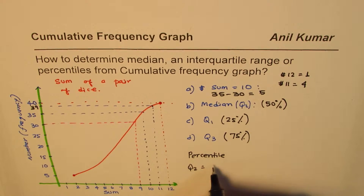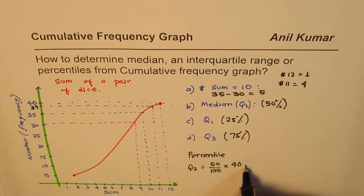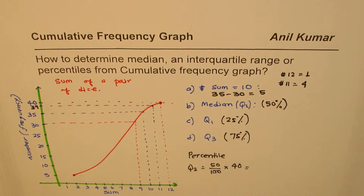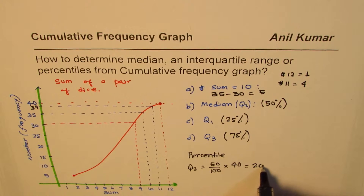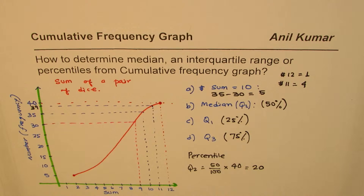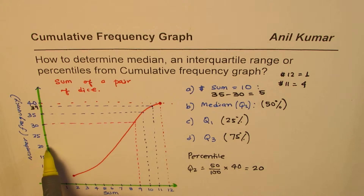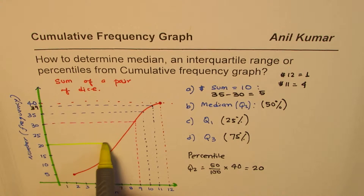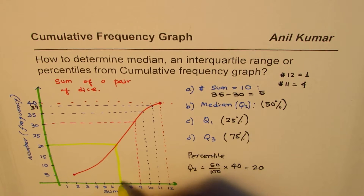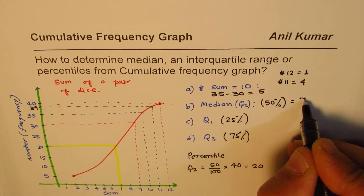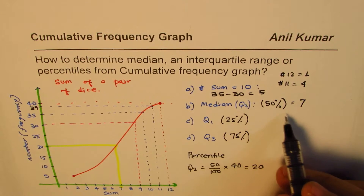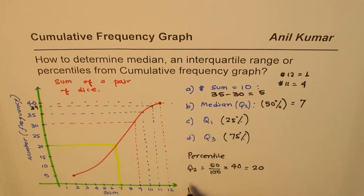We can convert quartile positions into percentiles and find Q1, Q2, and Q3. Q2 (the median) is the 50th percentile, which is 50% of 40 = 20. So to find the median, we draw a horizontal line at frequency 20 on the cumulative graph, bring it across to the curve, then drop down to the x-axis. This gives us a median value of 7.